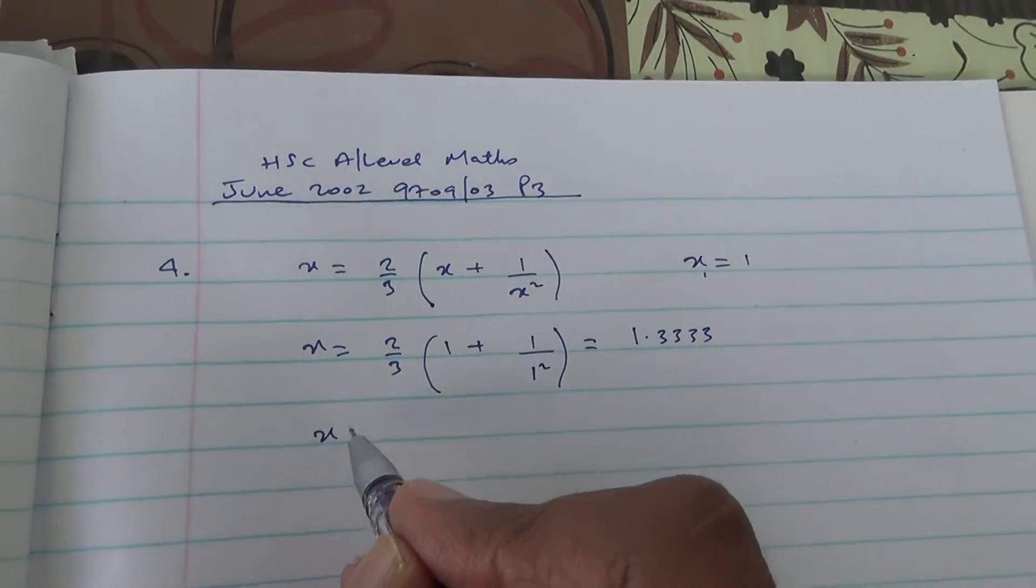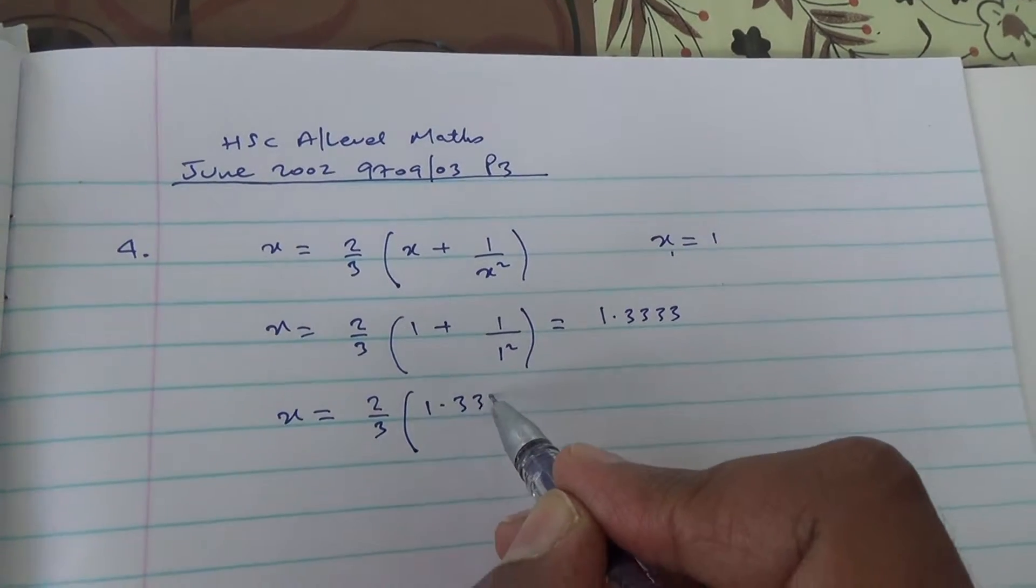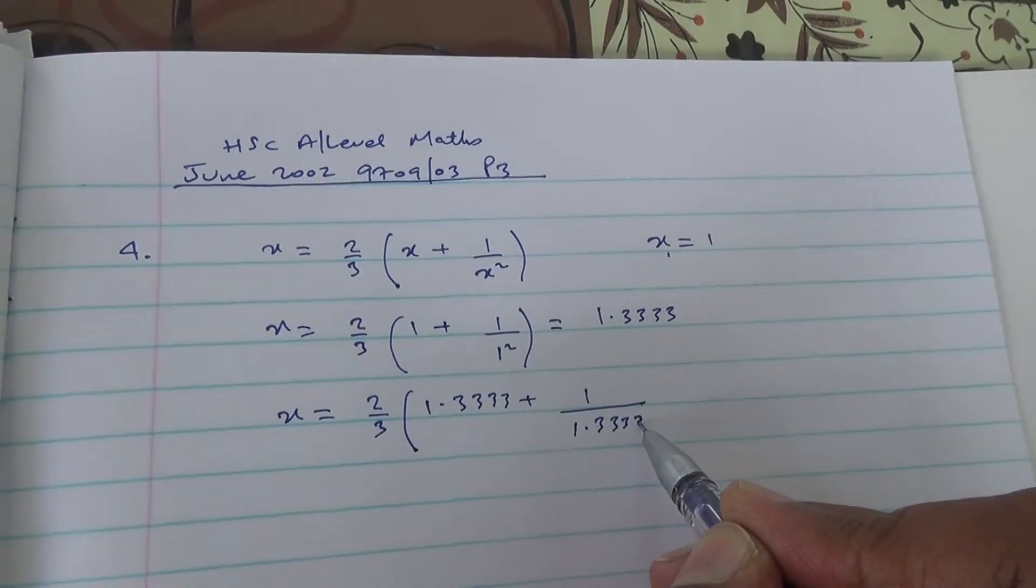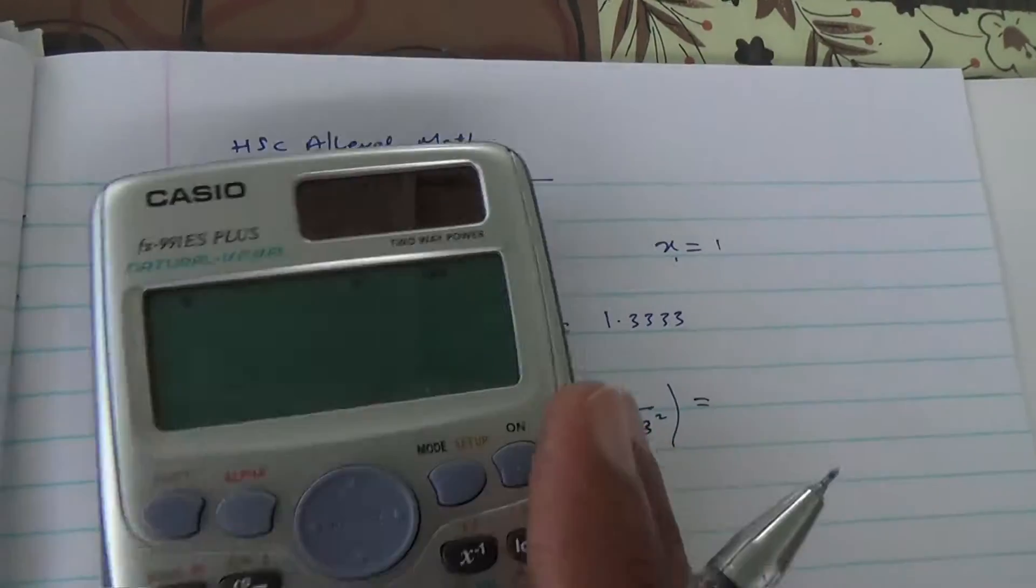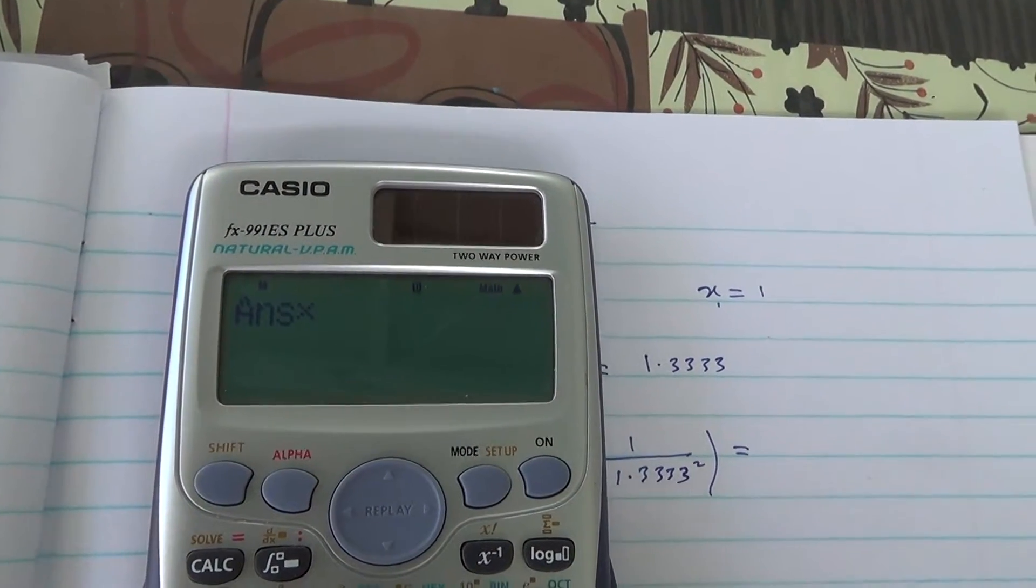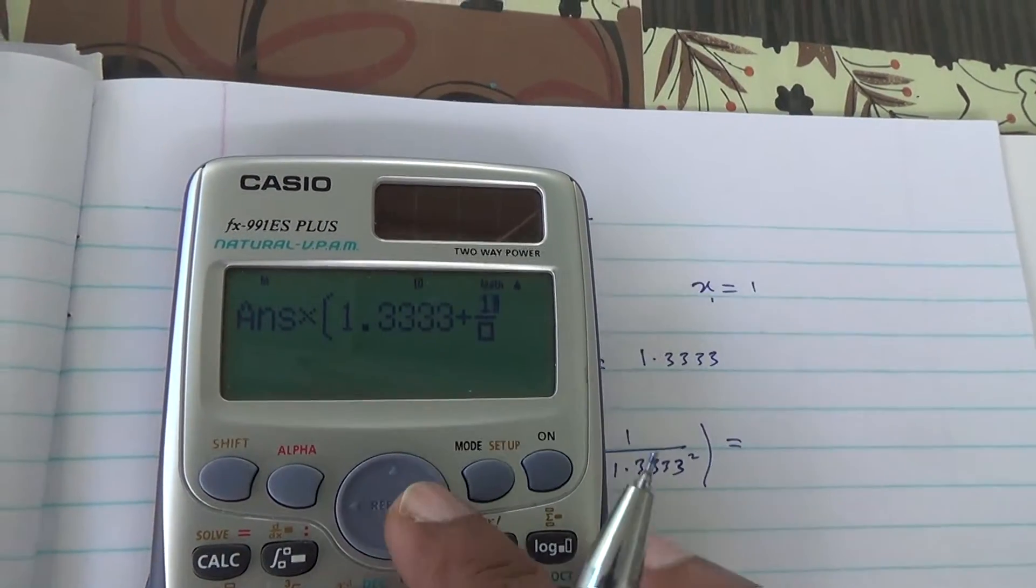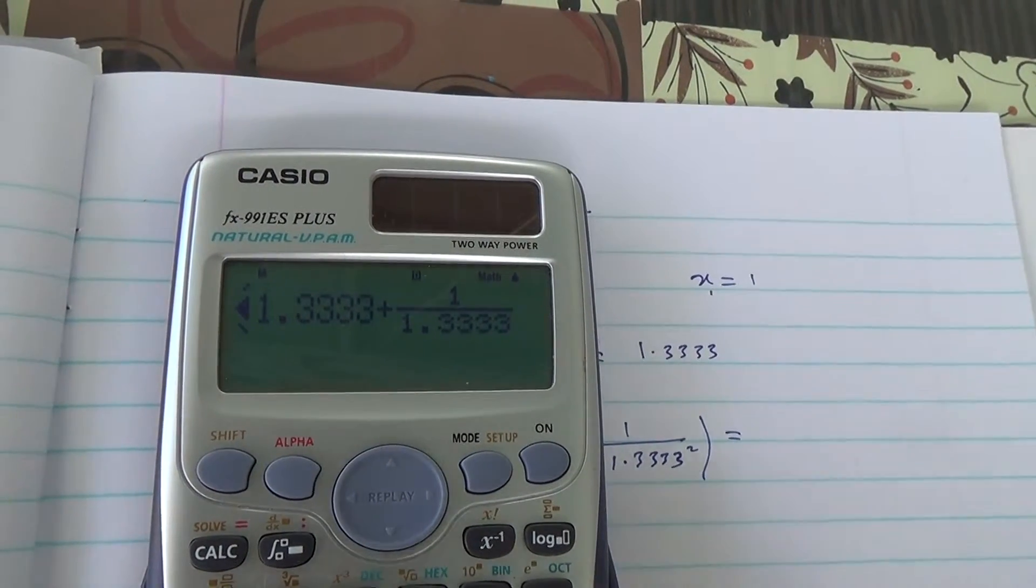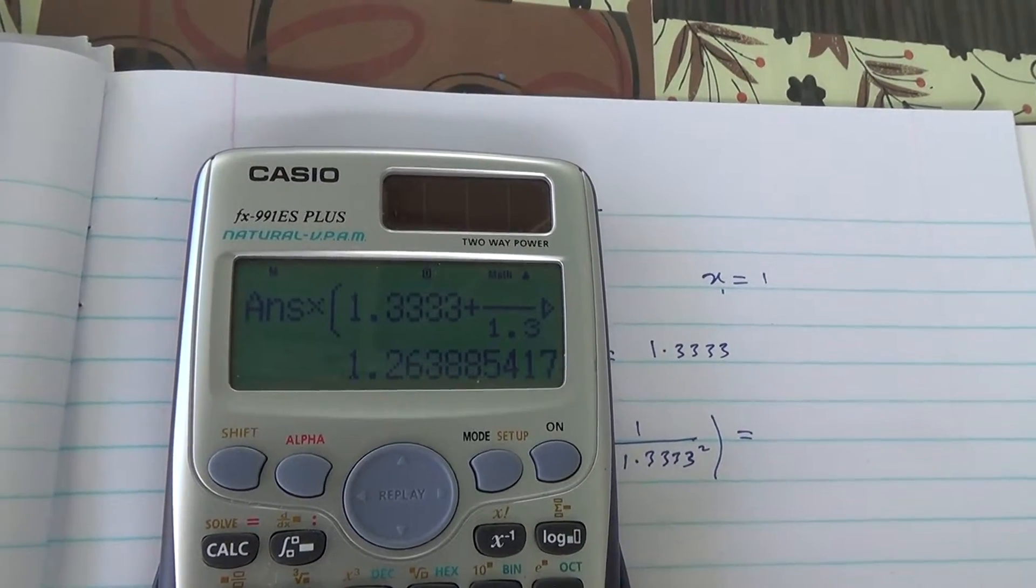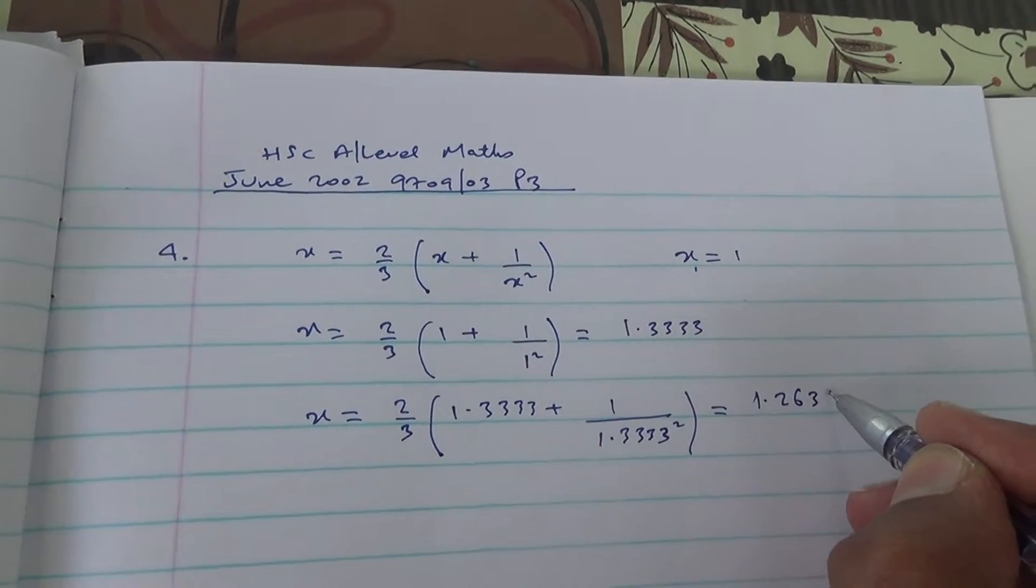So the second one is x is equal to 2 third into 1 decimal 3, 3, 3, 3 plus 1 over 1 point 3, 3, 3, 3 to the square. Let's do this one on the calculator. 2 thirds times 1 decimal 3, 3, 3, 3 plus 1 over 1 point 3, 3, 3, 3 squared. And that's going to give us 1 point 2, 6, 3, 9.